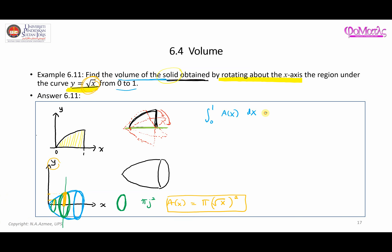So the integral becomes ∫₀¹ π · x dx. Since π is a constant, we factor it out: π ∫₀¹ x dx = π · [x²/2] evaluated from 0 to 1, which gives π · (1/2) = π/2. That is the volume of the solid.